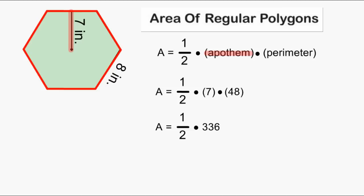Now we have to figure out what 1 half of 336 is. Multiplying any number by 1 half is the same thing as dividing that number by 2. So we are going to take 336 and divide that number by 2 and that will give us the area of our regular hexagon.